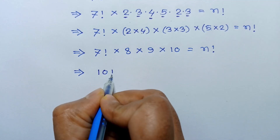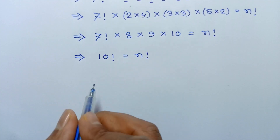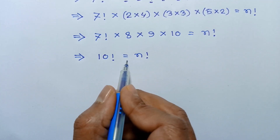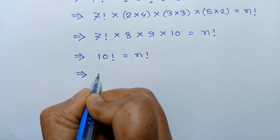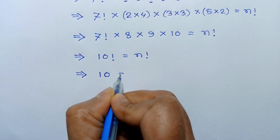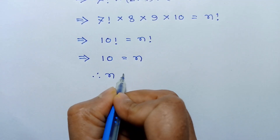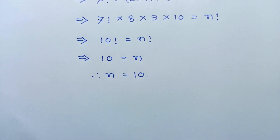So 10 factorial is equal to n factorial. Comparing both sides, 10 is equal to n. The value of n is equal to 10. This is the solution of this equation. If you like this video please subscribe to my channel. Thanks for watching.